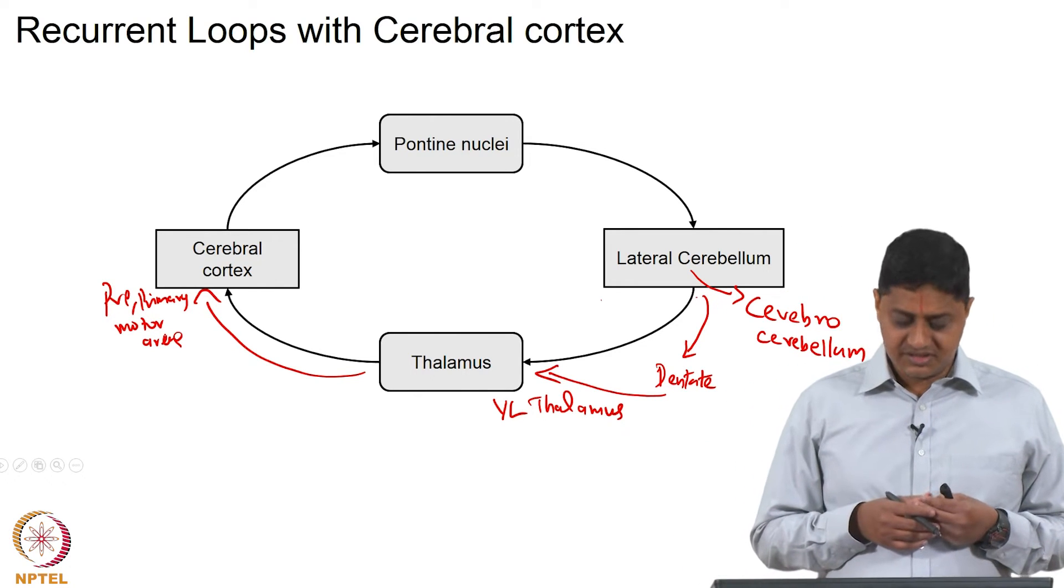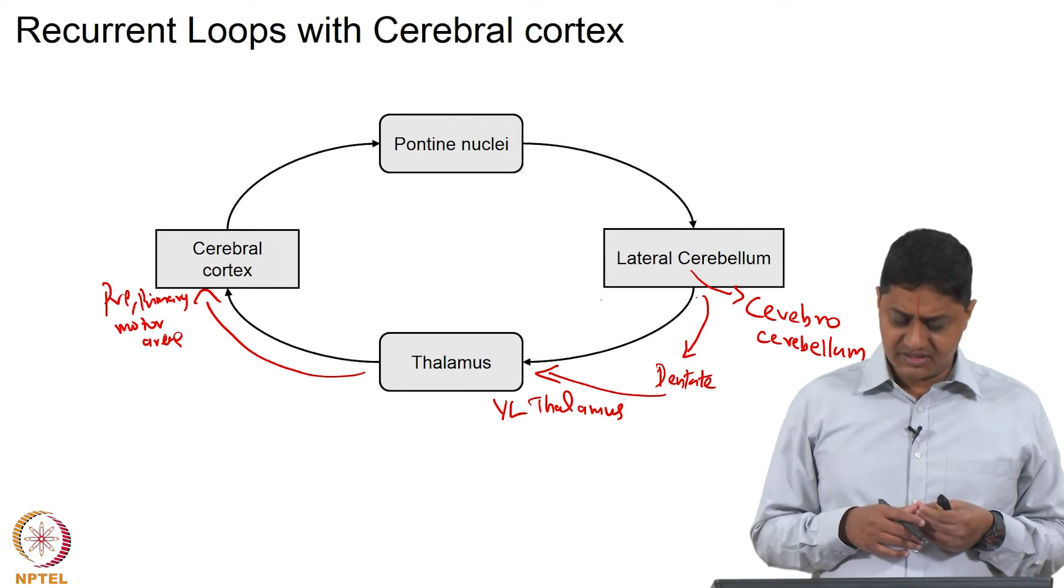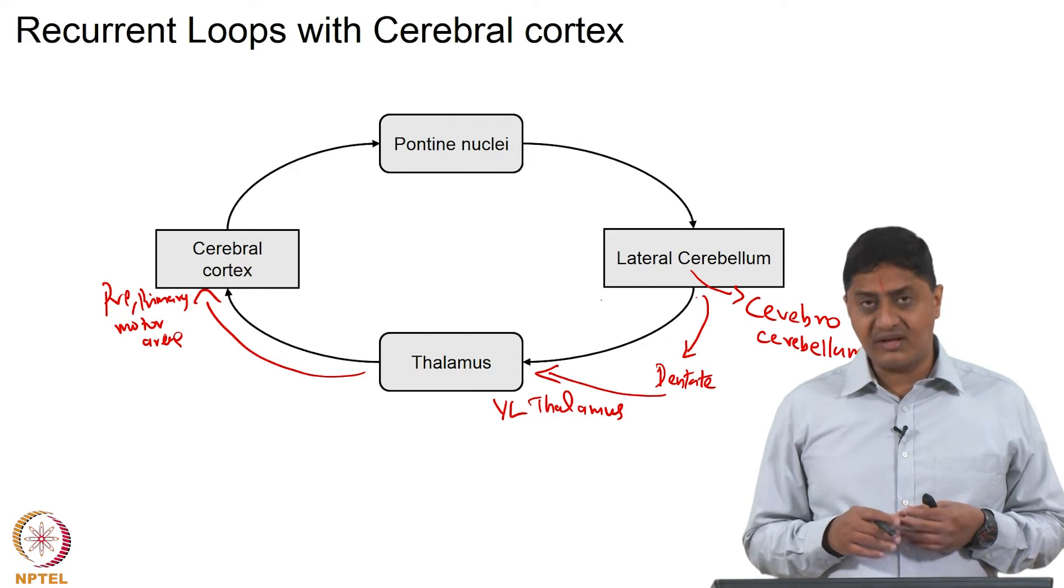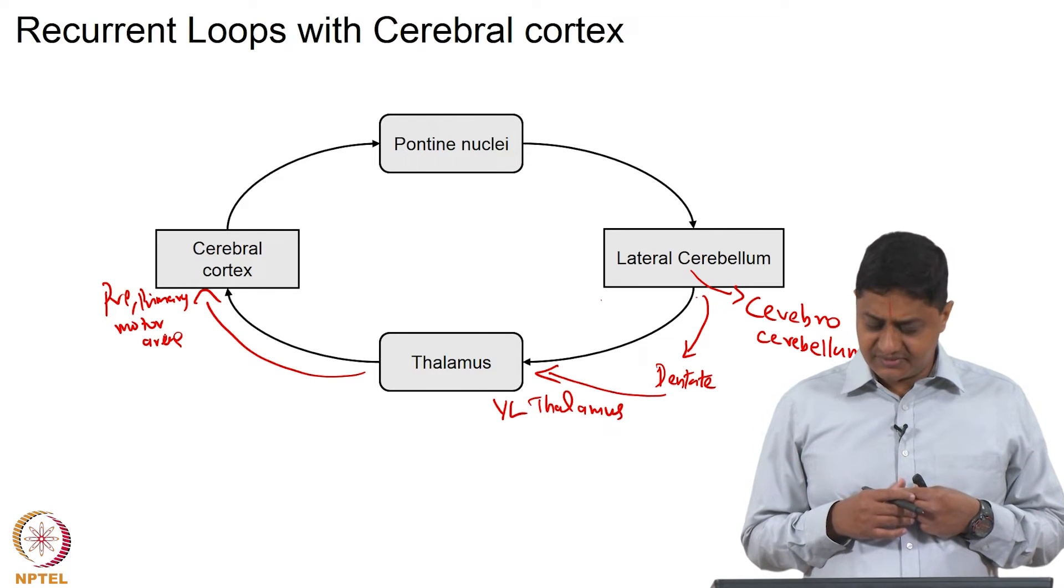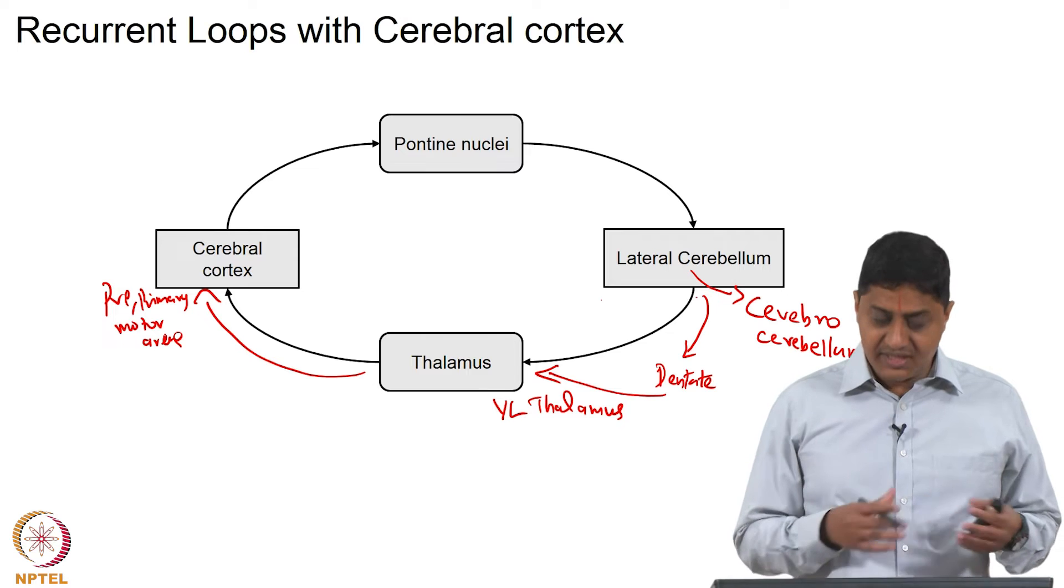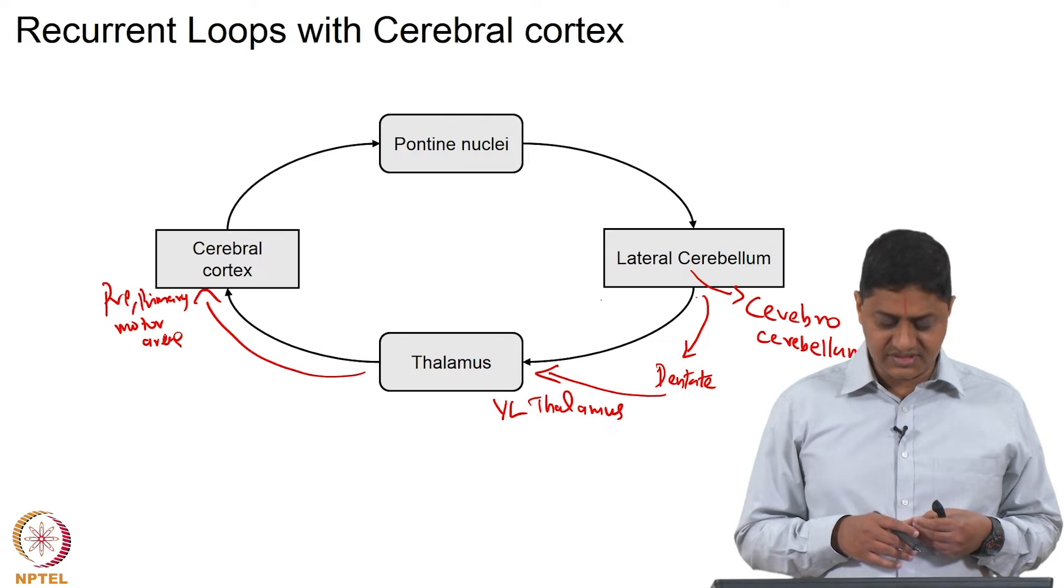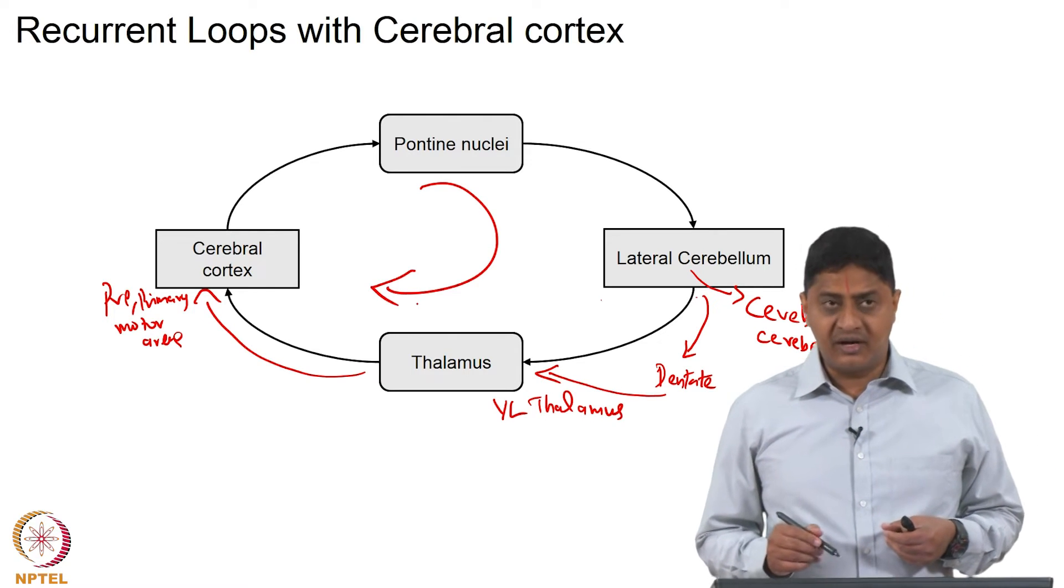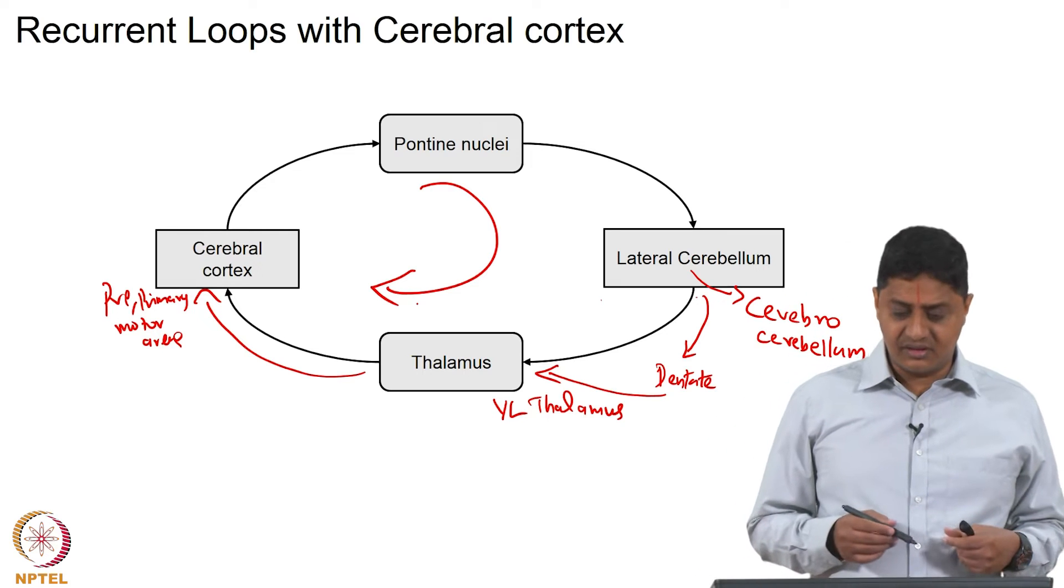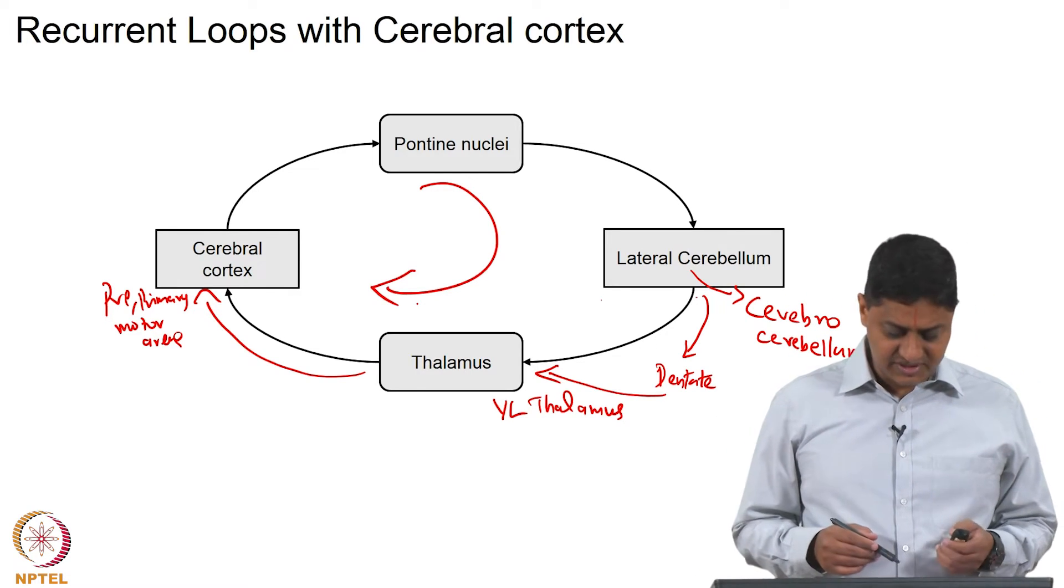The information starts from the cerebral cortex from multiple regions and reaches the cerebellum via the pons, and that is processed in the cerebellar cortex and via the dentate nucleus reaches the ventrolateral thalamus, and from the thalamus back to the pre and primary motor cortex. This is one recurrent loop and this is one of the prominent recurrent loops that the cerebellum has with the cerebral cortex.